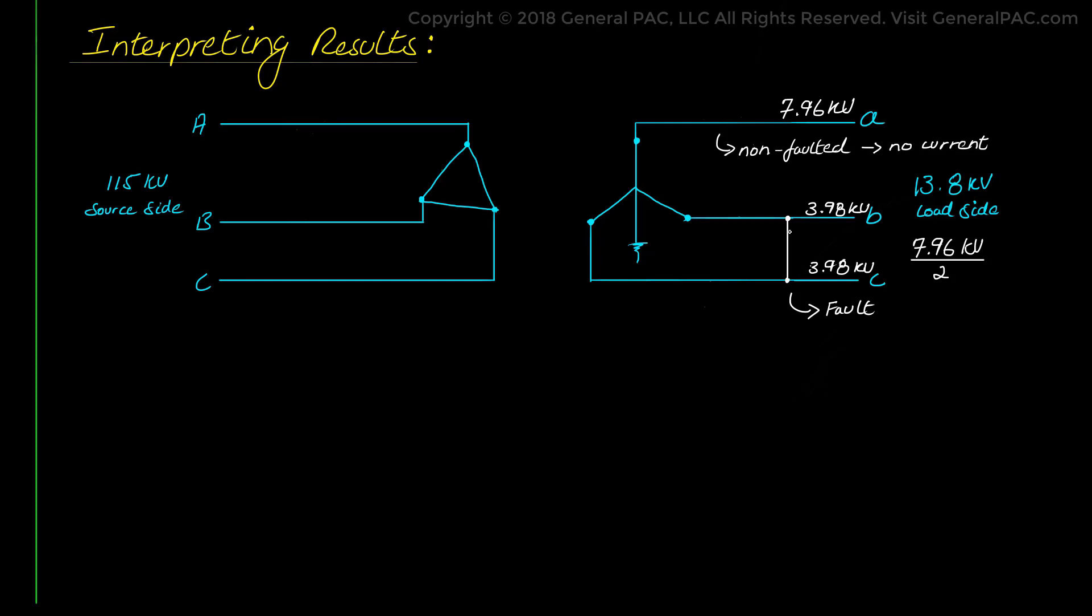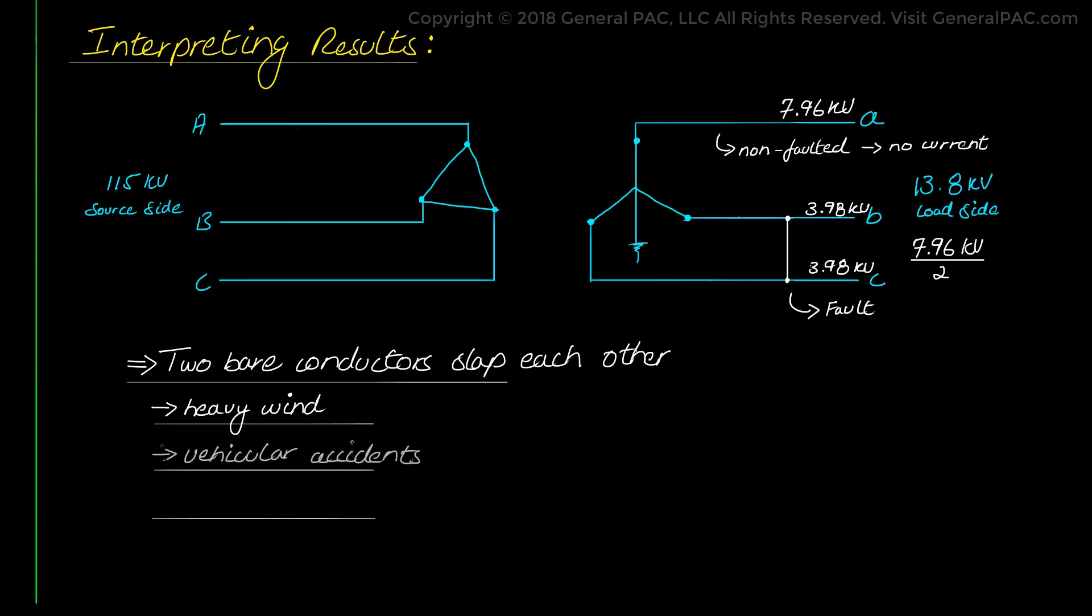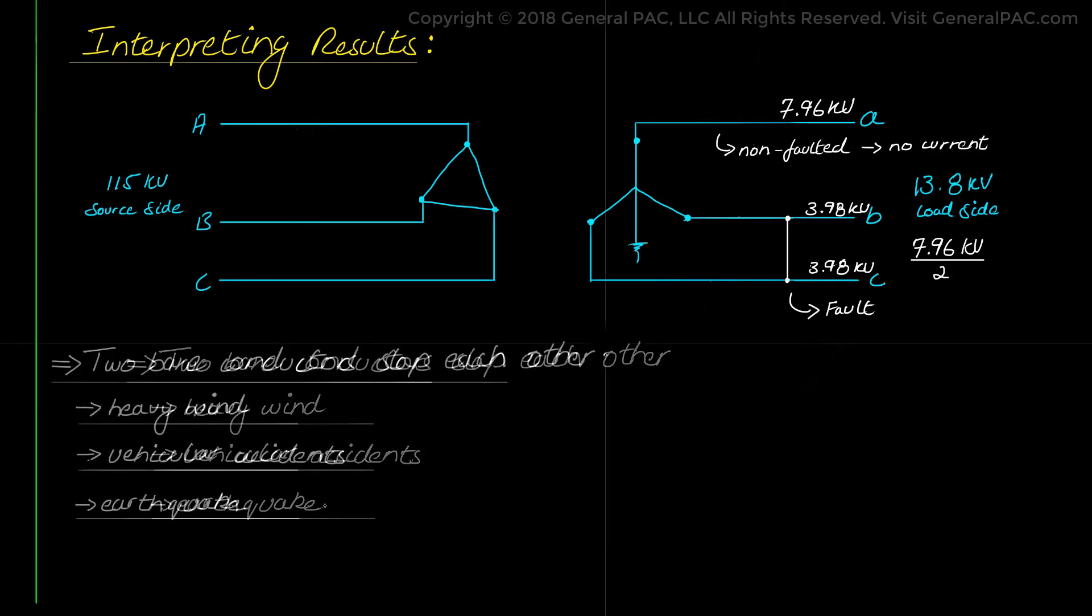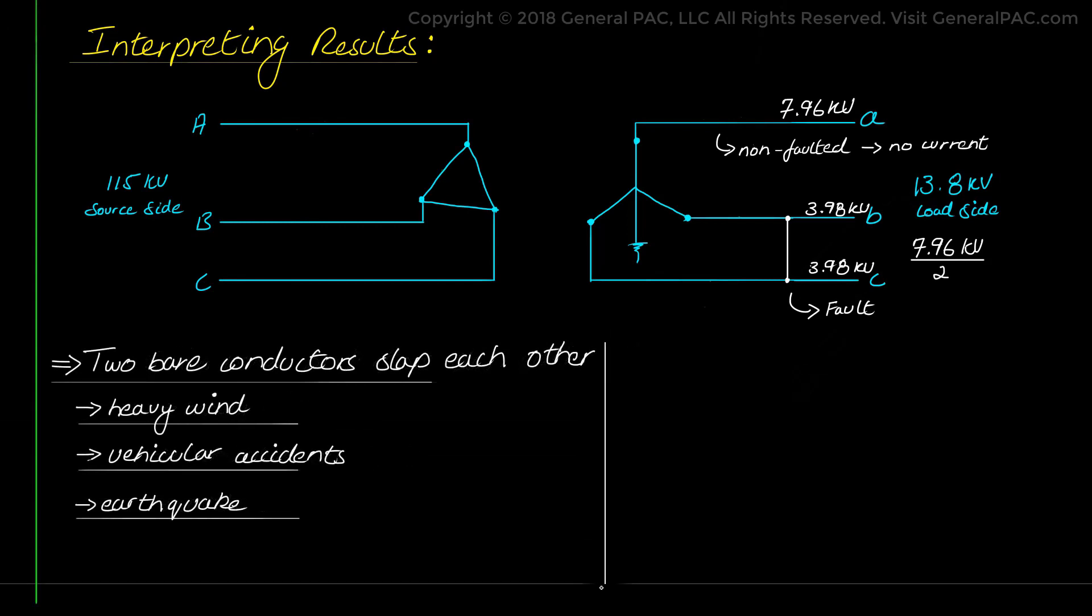Most notably, these types of faults occur when two bare conductors or phases slap each other due to like a heavy wind condition or a geo-disturbance like accidents, vehicular accidents on a pole where the bare conductor transmission lines are strung, or a small earthquake that causes these conductors to go back and forth and eventually slap each other. When that happens, it is a phase-to-phase fault.